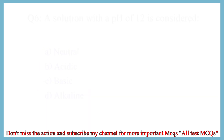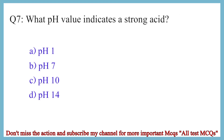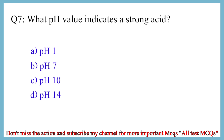Question No. 7. What pH value indicates a strong acid? The correct answer is option A: pH 1.